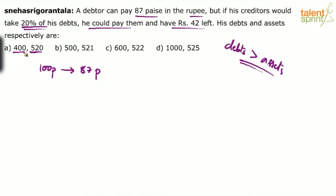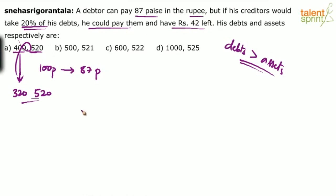Assume option A is correct. If option A is correct, his total debt is 400 rupees and his assets are 520. Is that a good or bad situation? This is obviously a good situation — but understand, this person's debts must be greater than his assets. Here, debt is less than assets, so option A is wrong. You can also verify: 400 reduced by 20% becomes 320; assets are 520; he'd be left with 200 rupees, not 42. So option A is wrong.